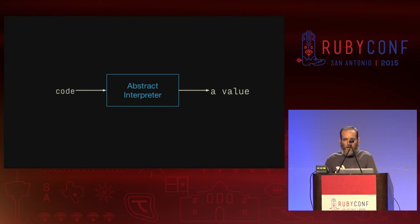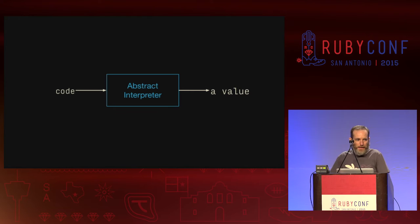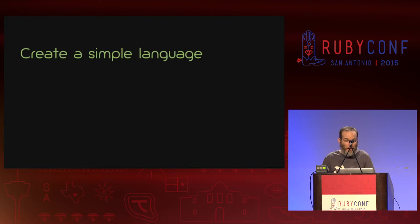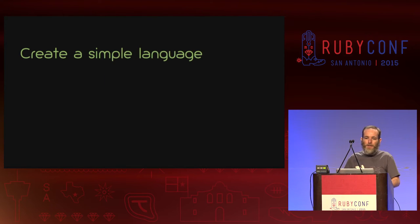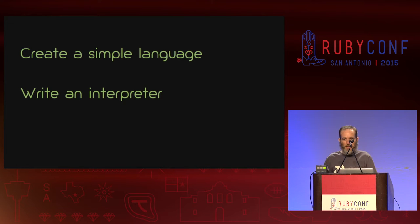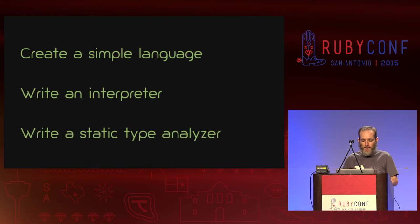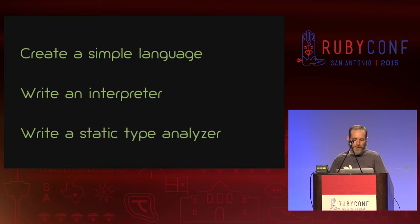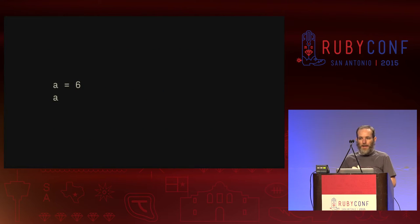I'm going to write a static type analyzer by writing an interpreter, but not for Ruby — Ruby is a very complicated language and we get bogged down in the details very quickly. Instead, I'm going to create a very simple programming language, write an interpreter for it in Ruby, and then write a static type analyzer by making my interpreter more abstract.